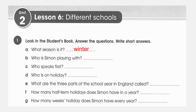Question: Who is Simon playing with? Who was Simon playing with? Nobody — he was playing alone. Nobody. Question: Who speaks first? Who spoke first? Yasr — Yasr is the first one who spoke.